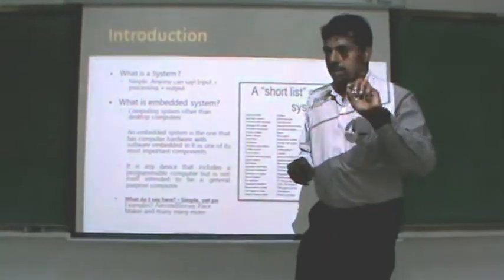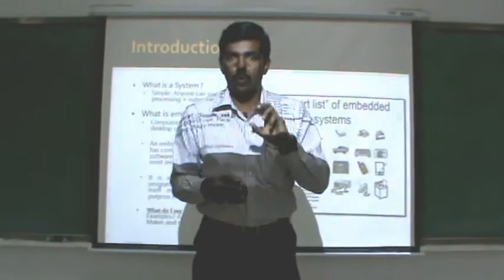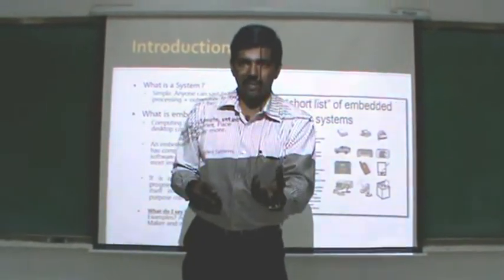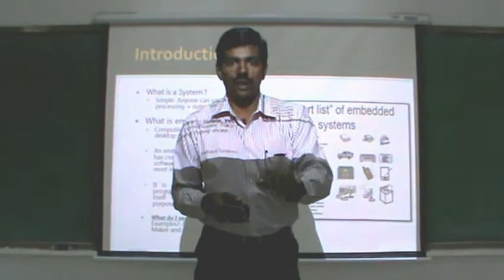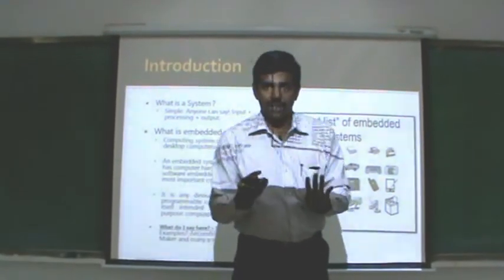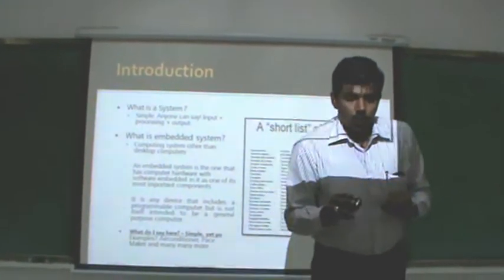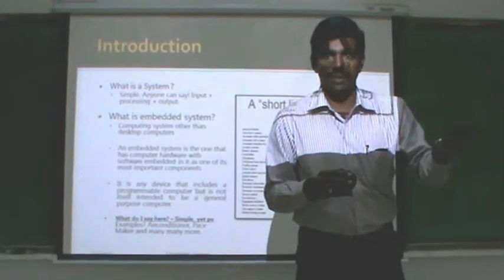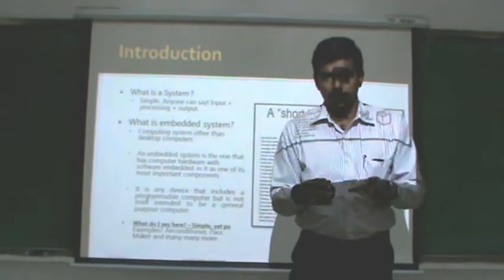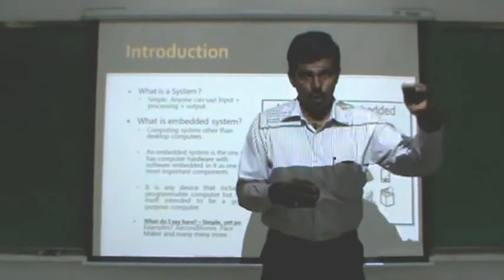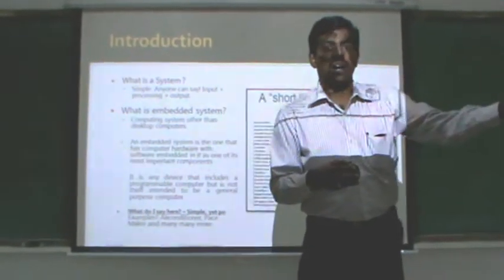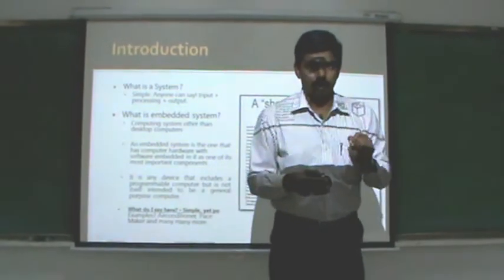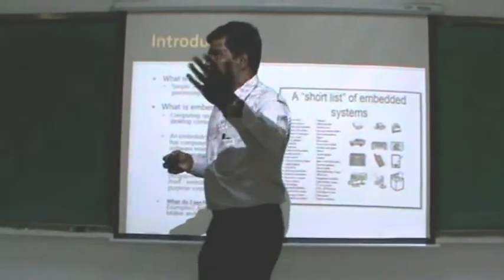Let's take a pacemaker as an example. A pacemaker, when a patient's heartbeat goes low, ensures the patient doesn't die by increasing the heartbeat on time. We set the heartbeat count — say 72 beats per minute — as the input. The pacemaker keeps monitoring the heartbeat, and whenever it goes low, it takes corrective action to bring the heart back to the expected condition of 72 beats per minute.